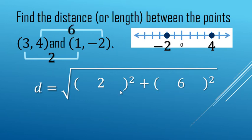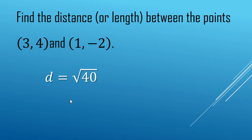Next up, we're squaring. 2 squared makes 4, 6 squared makes 36. Now we can add 4 plus 36. Distance is square root of 40.